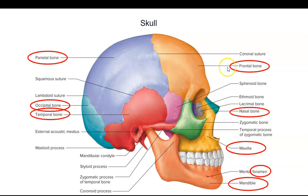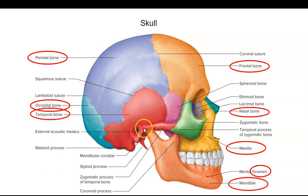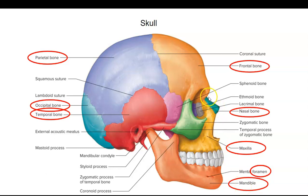First the skull. The frontal bone, that's out in front. We have two parietal bones, one on each side. There's two temporal bones, one on each side by the ear. And we have the occipital bone, that's in the back. The upper jaw is called the maxilla, the lower jaw is called the mandible, and then we also have two nasal bones, one on each side.